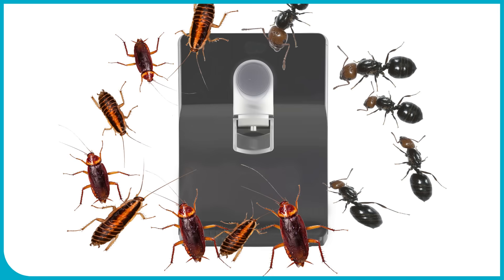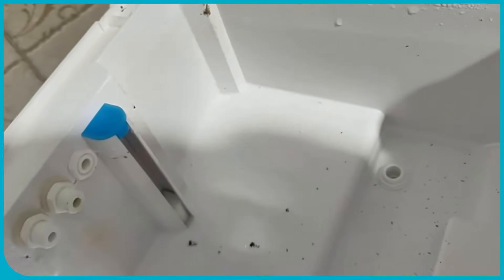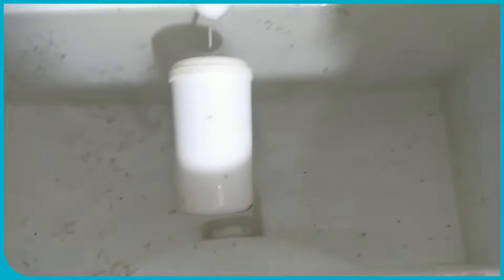Insect entry points and how to mitigate them: Tiny gaps and openings. Even a seemingly tightly sealed tank can have minuscule gaps around the lid, faucet connection, or where pipes enter and exit the tank. Ants, being incredibly small, can exploit these minute spaces.